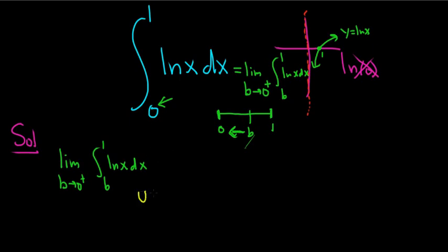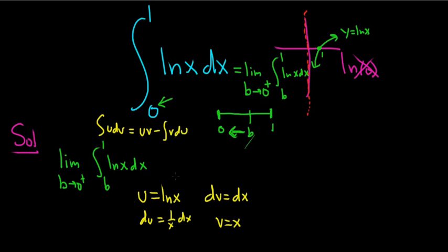So what you do is you let u equal ln x, so famous integral. And dv is what's left over, it's dx. So then du is 1 over x dx. And integrating both sides here, you would just get v equals x. And the integration by parts formula says if you have udv, the integral of udv is equal to uv minus the integral of vdu. That's the parts formula.